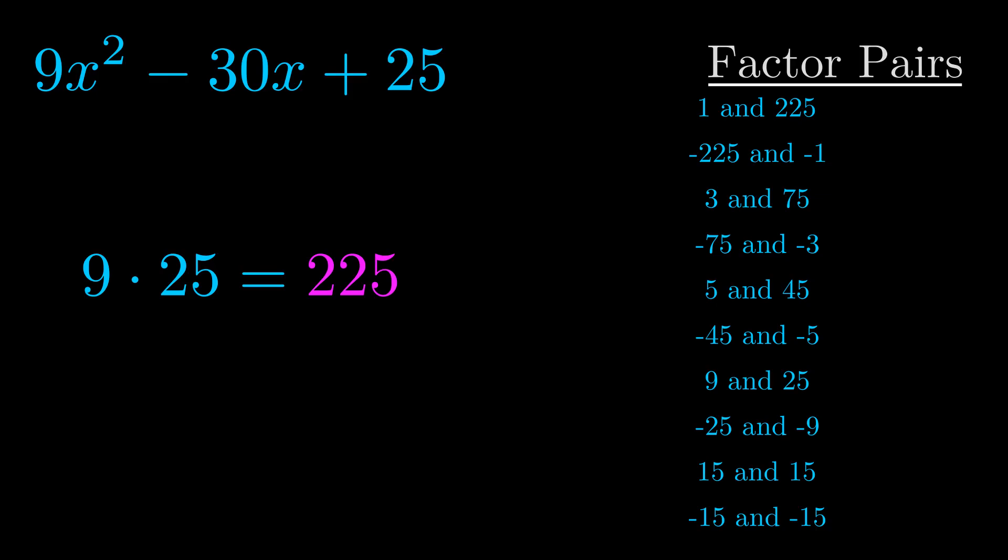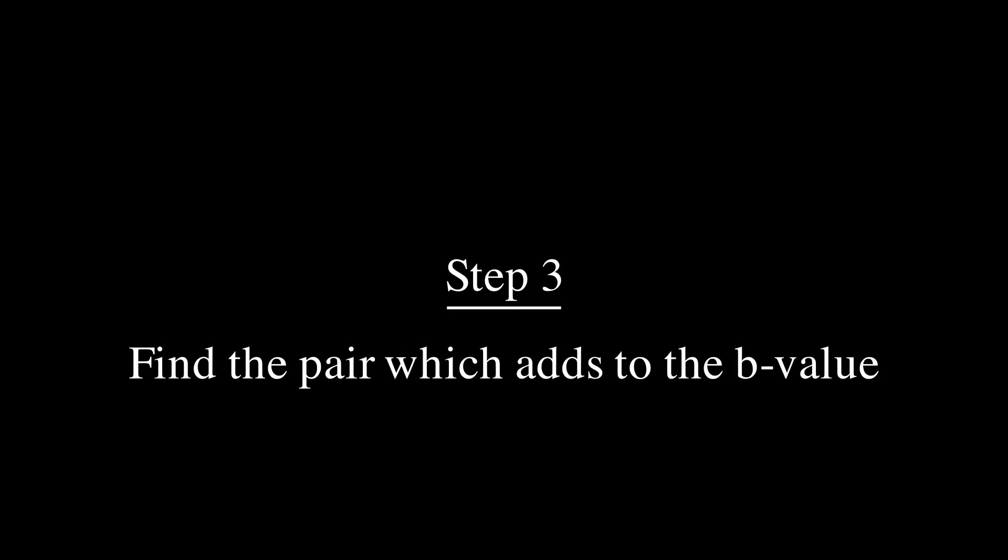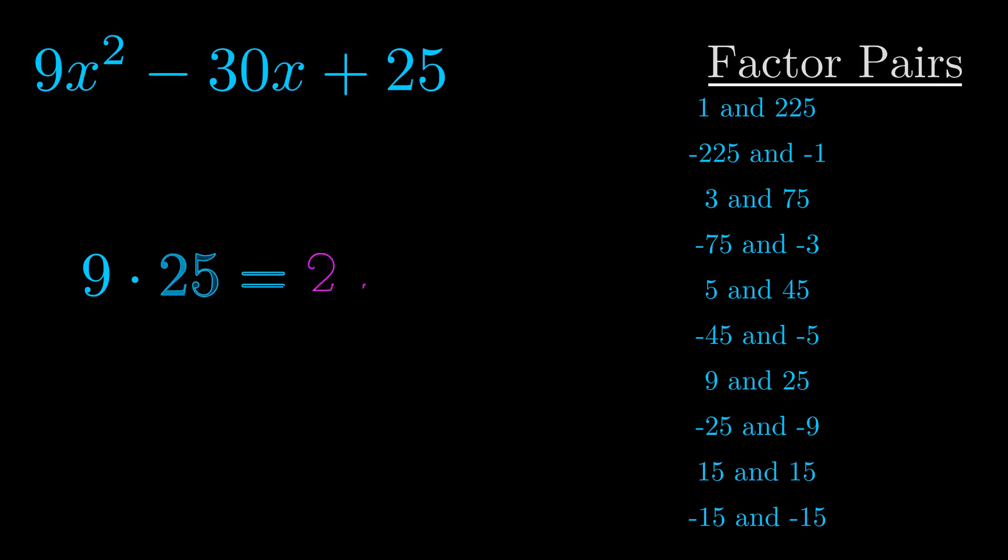Now once you have these factor pairs the goal is to find which of these pairs adds to the b value. The b value is the coefficient on the x term. That's the middle term, the one that we haven't done anything with yet.